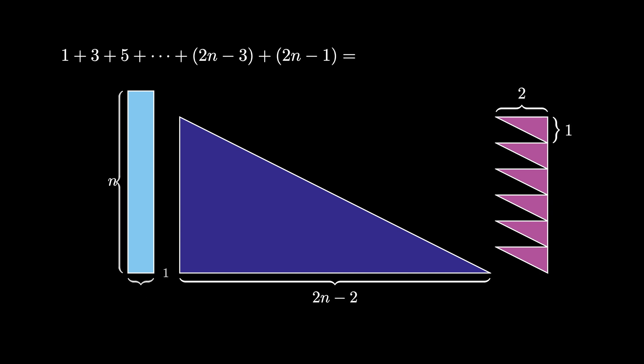The rectangle has an area of n times 1, or n. The large triangle has an area of 1 half n minus 1 times 2n minus 2, which is n minus 1 times n minus 1, or n squared minus 2n plus 1. And finally, the n minus 1 triangles on the right all have an area of 1 half times 1 times 2, or 1.